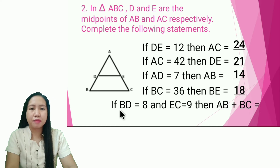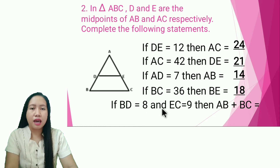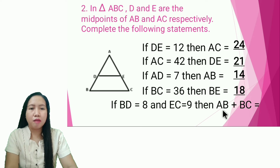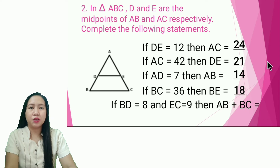Last one: if line segment BD is equal to 8 and EC is equal to 9, then line segment AB plus line segment BC is equal to what? The answer is 34.